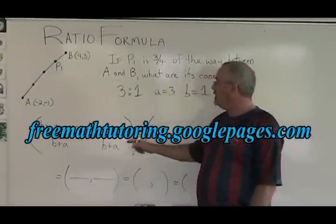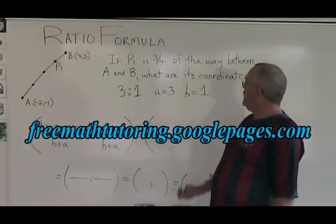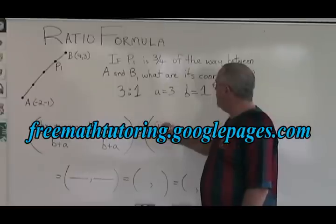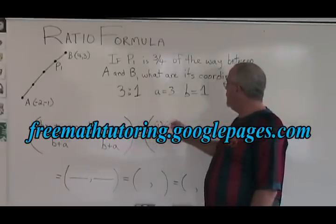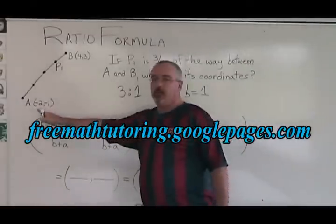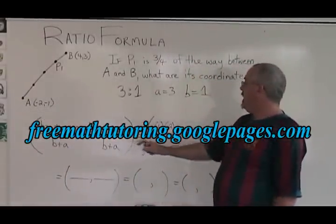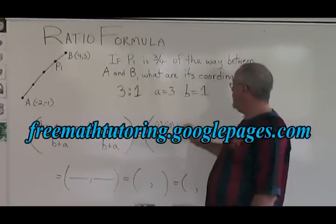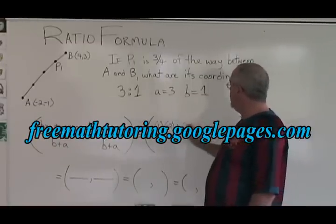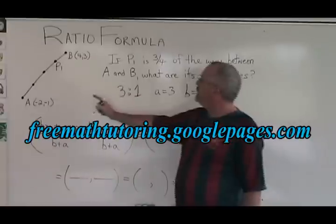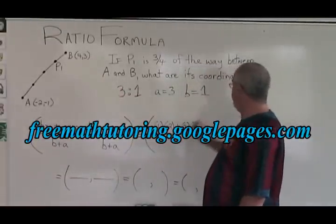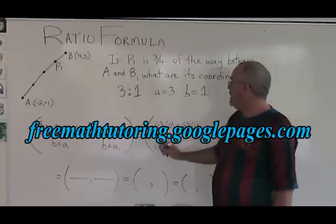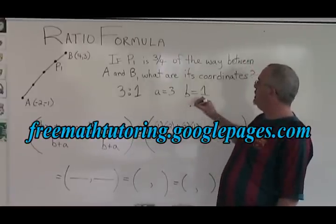Now it's time to fill in the formula. Bx1 means 1 times -2, the x coordinate of my starting point, plus Ax2 becomes plus A, which is 3, times x2, which is 4, over B plus A. B plus A is 1 plus 3.